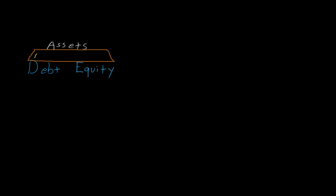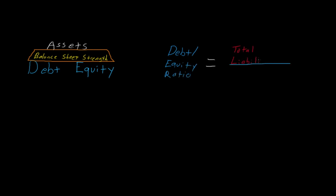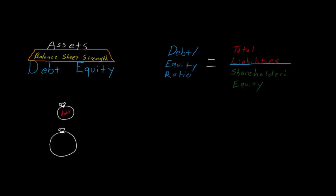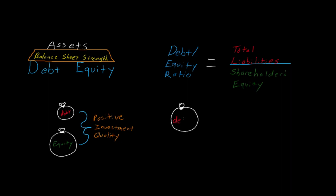A company's reasonable, proportional use of debt and equity to support its assets is a key indicator of balance sheet strength. One means to measure capital structure is by looking at the company's leverage, measured by the debt to equity ratio. In simplest terms, a low level of debt and a corresponding higher level of equity may be interpreted as a positive sign of investment quality, while a company heavily financed by debt poses greater risk, as this firm has a higher degree of leverage.